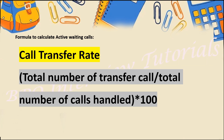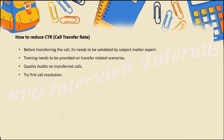The formula for Call Transfer Rate is: Total Number of Transferred Calls divided by Total Number of Calls Handled, multiplied by 100. In this way, you can calculate the transfer rate for an individual employee, your team, or the entire workflow.